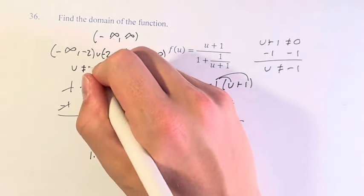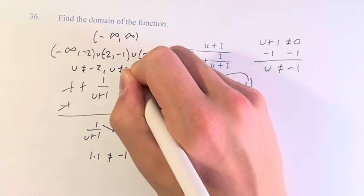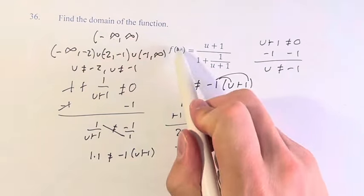This is the same as writing u ≠ -2, u ≠ -1. Both of these notations represent the domain of the function f(u).